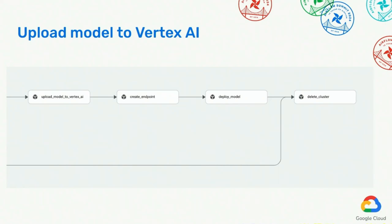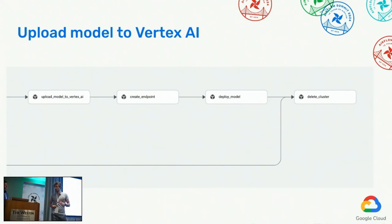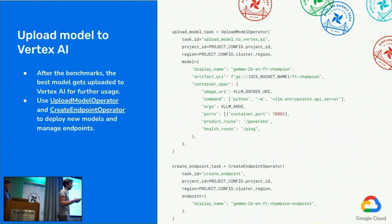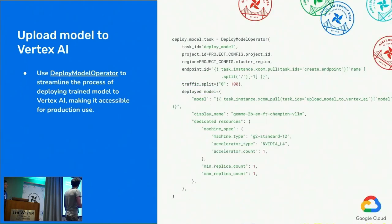The last step is uploading the model to Vertex AI. We have operators for this — you can use the link to the model in GCS and trigger the operator in three steps: first upload the model, then create an endpoint, and then the model will be available on Vertex AI. So you can use it, validate it, or whatever you want with it. The deployed model operator is the final step here.